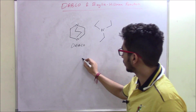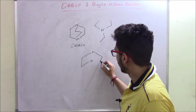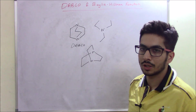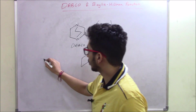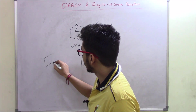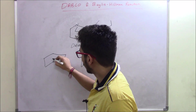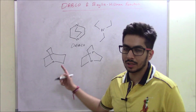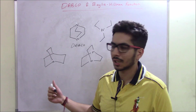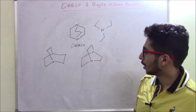Now let's compare DABCO with triethylamine. Another way of drawing DABCO is with two nitrogens connected in the ring like this — both representations are equivalent. There's also a compound called quinuclidine, whose structure is similar to DABCO but with only one nitrogen. So here we have quinuclidine, DABCO, and triethylamine.